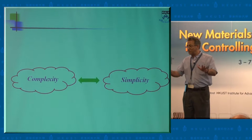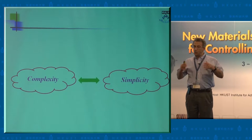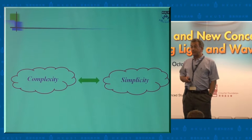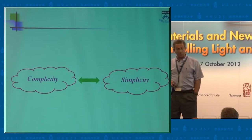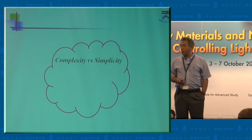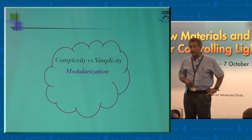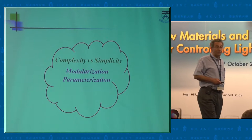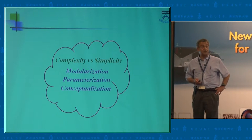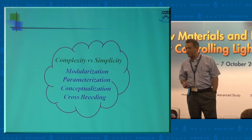I'm going to share with you five examples that have nothing to do with metamaterials. But those examples tell us what happens when a field gets to a certain level of development and what type of quantum leap they had in order to make those fields so successful. You'll see in these five examples certain commonalities, which you can categorize in the balance between complexity and simplicity. They involve modularization, parametrization, conceptualization, and analogy and cross-breeding among different fields.